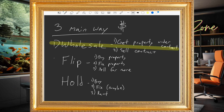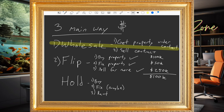Fix and flip: first, you buy the property, then you fix it up, and then you sell it for more. Let's say you buy the property for $100,000 and fix it up for $50,000, then sell it for $250,000. Right there you make $100,000 minus fees. Let's say your fees are $20,000, so you've made $80,000. That's fix and flip.